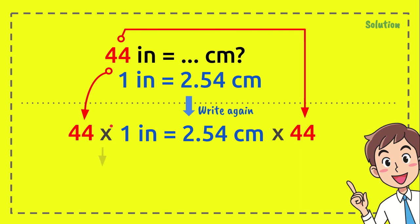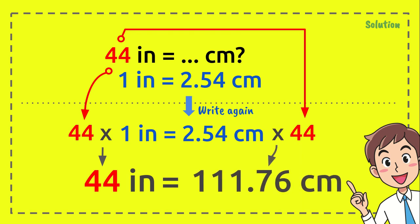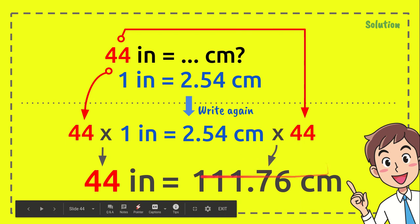Now, 44 times 1 equals, of course, 44 inches. And 2.54 centimeters times 44 equals 111.76 centimeters. And that's the answer. Yep, that's the answer.